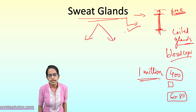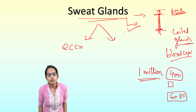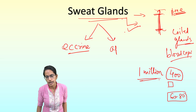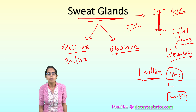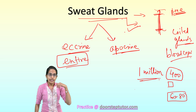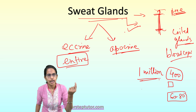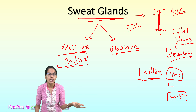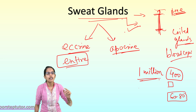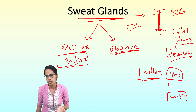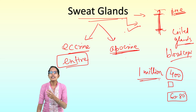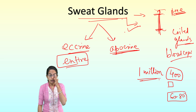Sweat glands can be classified into two types: eccrine sweat glands and apocrine sweat glands. Eccrine sweat glands are present throughout the entire body — a helpful mnemonic is 'E for eccrine, E for entire body.' Apocrine sweat glands, however, are present only in the axillary and genital parts.